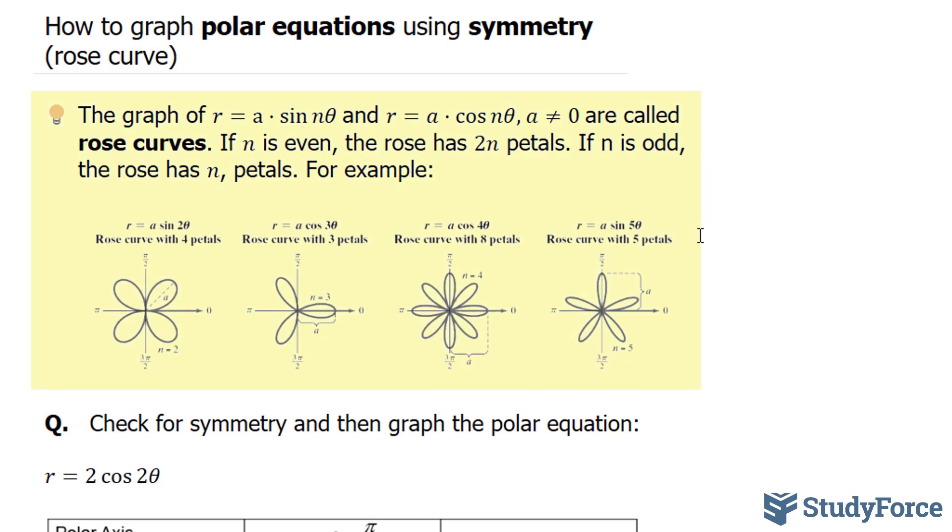The graph of r equals a times sine n theta and r equals a times cosine n theta, where a is not equal to zero, are called rose curves.